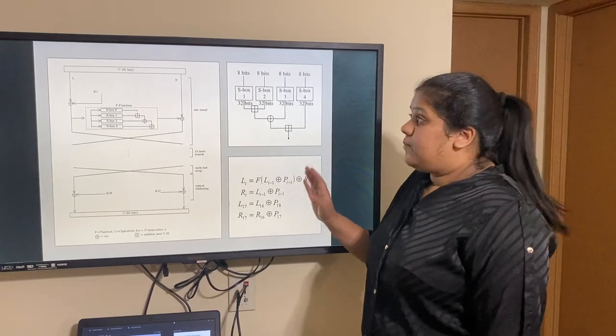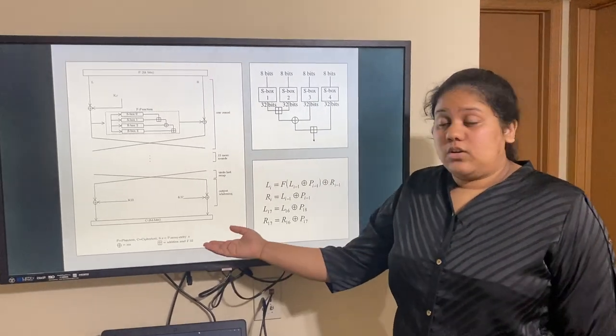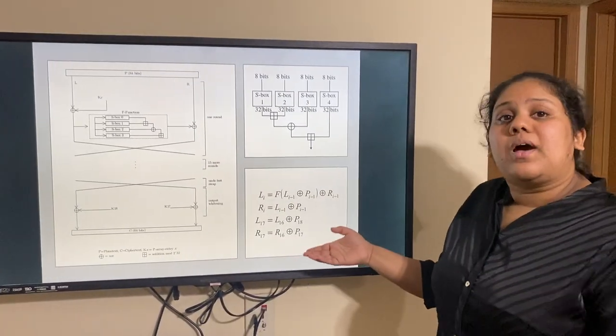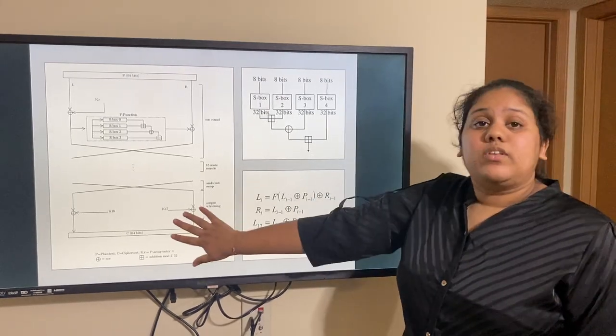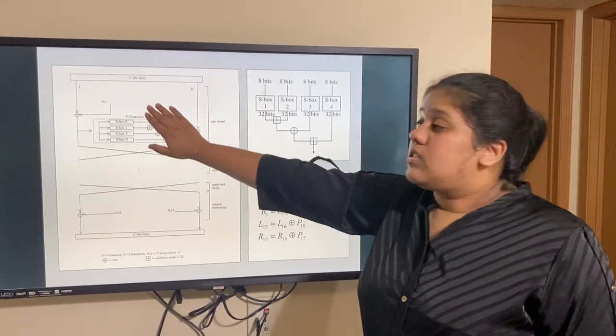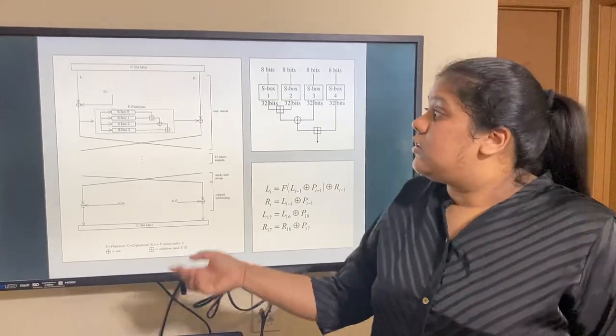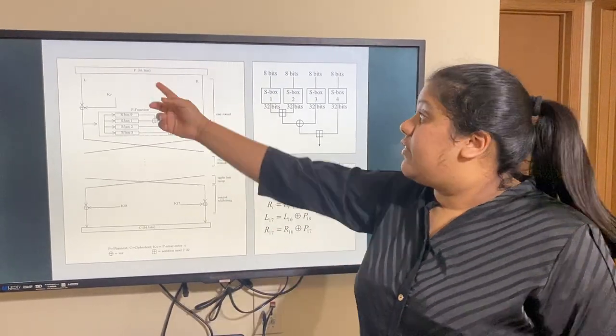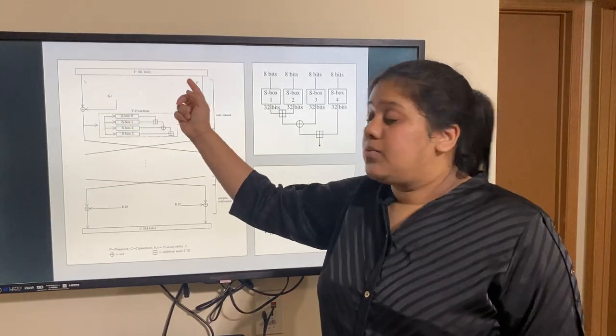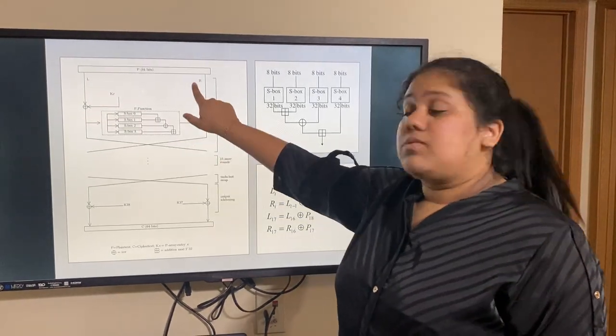Now, this is the working, this is the complete algorithm, this is the function F, and this is the mathematical representation of the algorithm. So, what happens is we have a plaintext of 64 bits which is divided into two parts. This is the very first step where we divide it into two parts of 32 bits each. This becomes our L1, this becomes our R1.